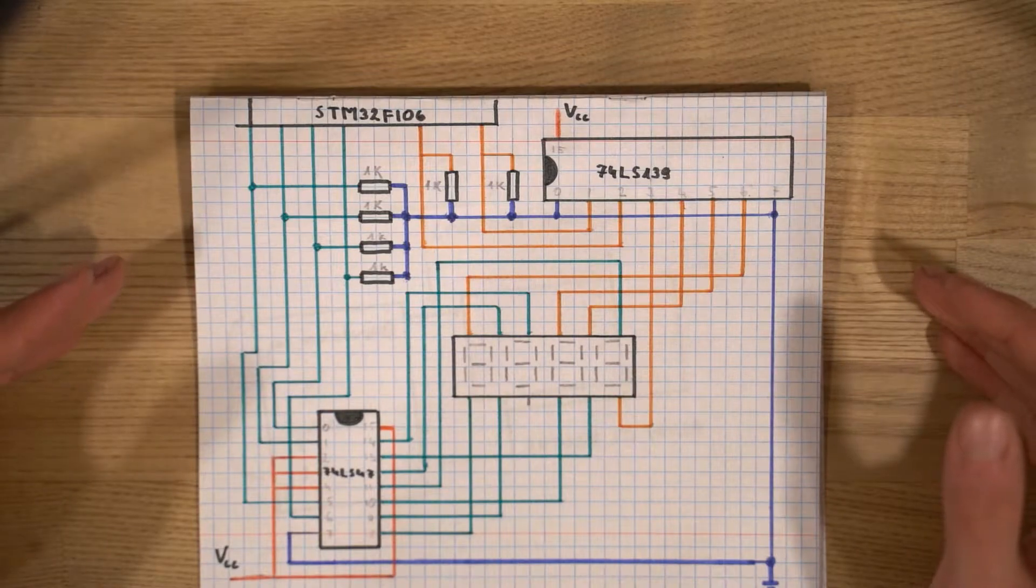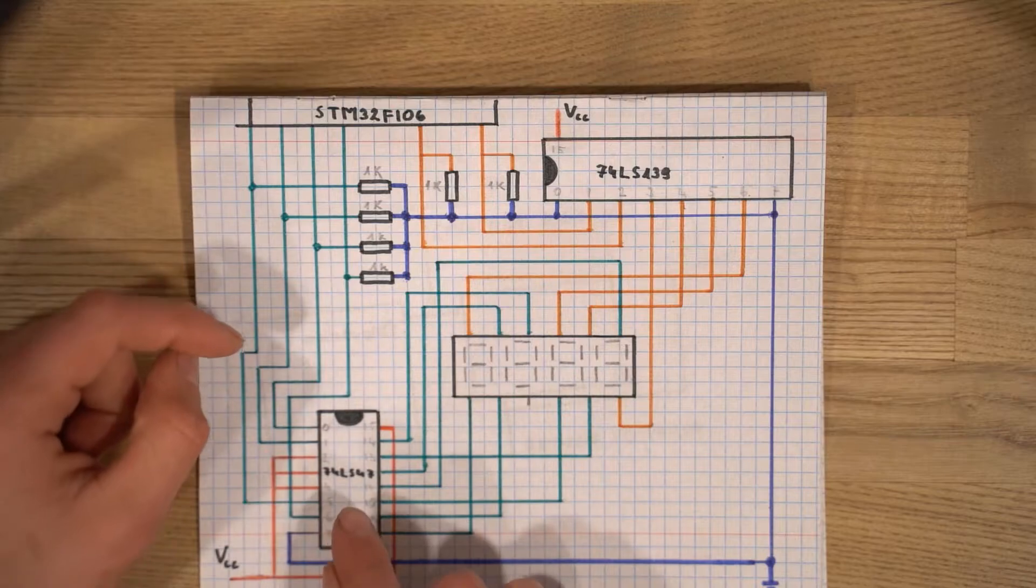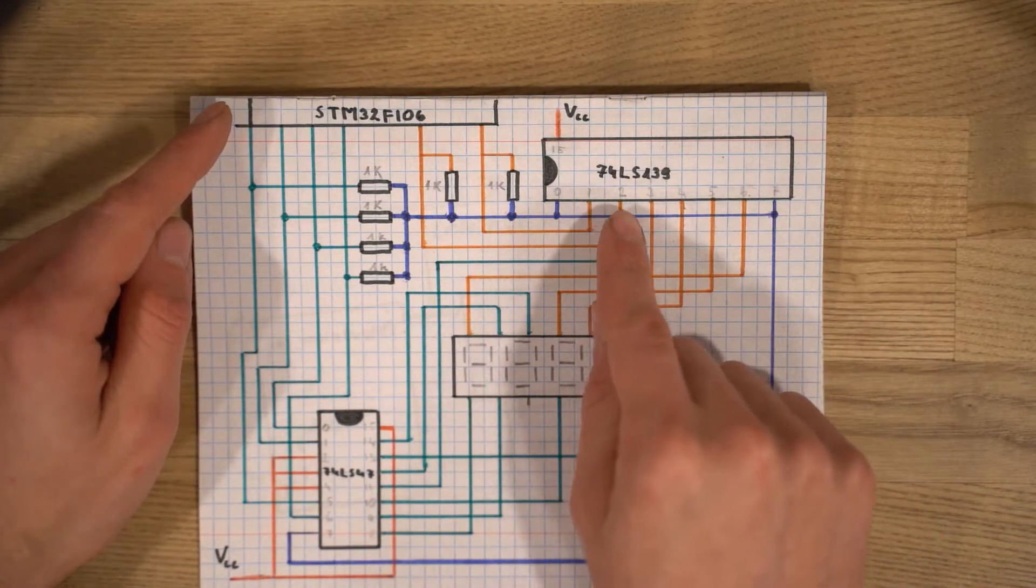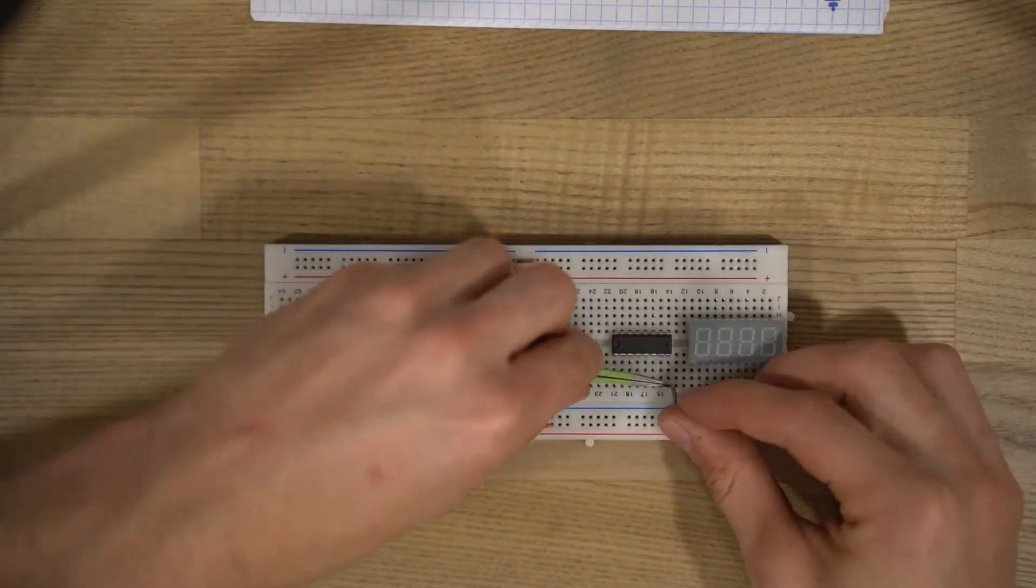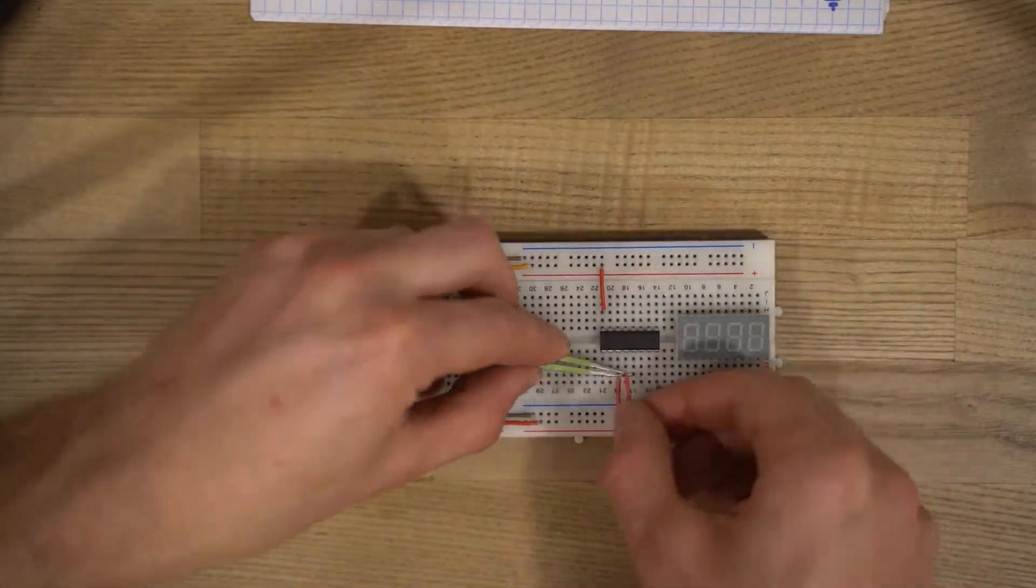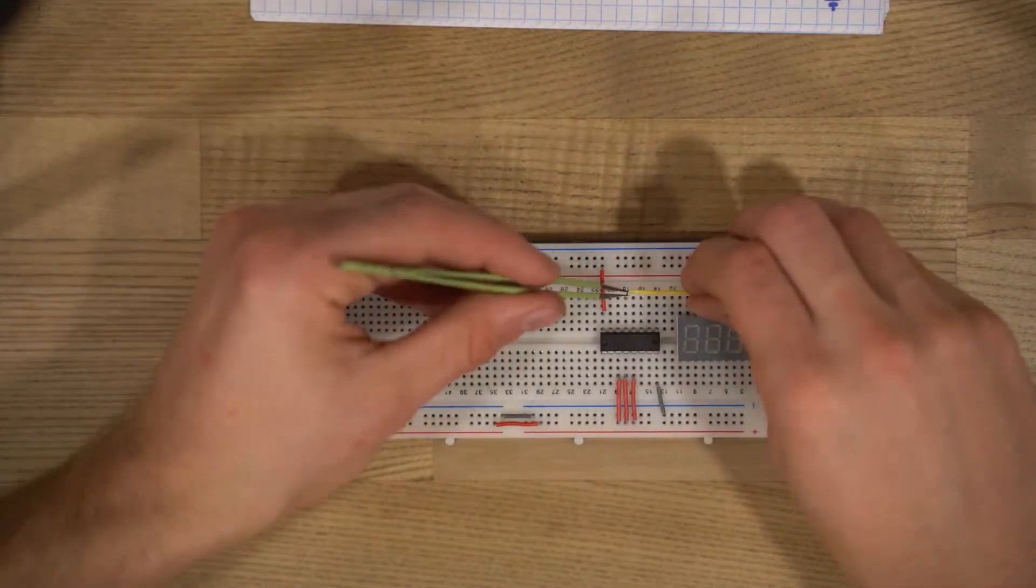Here is our circuit we are going to build today. All this part is not going to change. This is the 74LS47, our STM32, and the upgrade is the 74LS139 which I was talking about. Before upgrading I want to rebuild everything from scratch because first of all the current circuit takes 2 boards and I would like to make it a little bit more compact. And second I think you would like to see how I am building it.